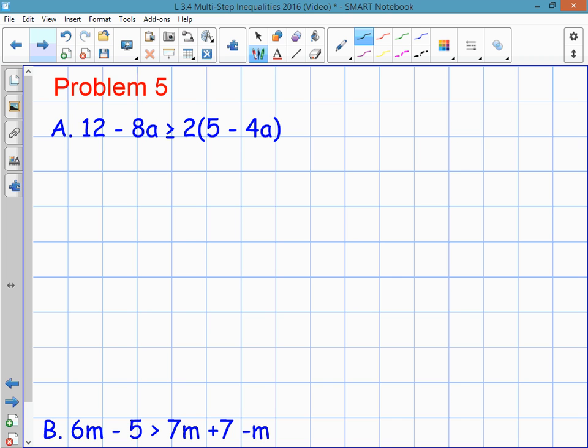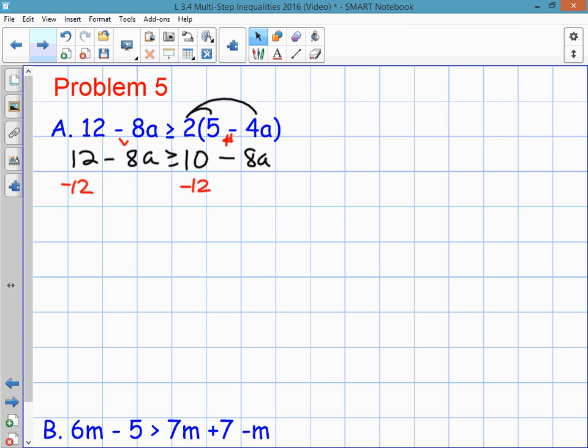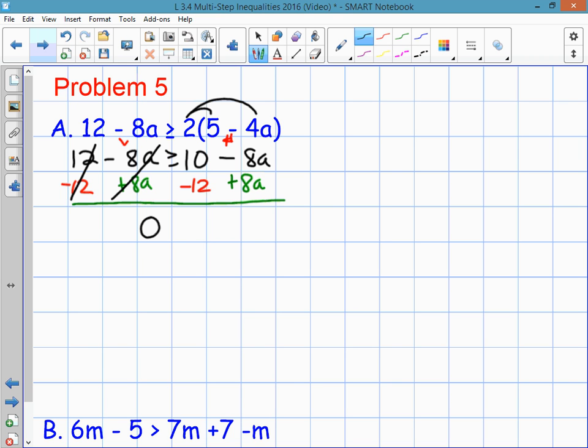In this first example, problem 5a, first step is to distribute the 2. So I get 2 times 5 is 10. Minus 2 times 4a is 8a. Because there are variables on both sides, I'm going to choose a variable side and a number side. And I'm going to subtract 12 from this side and subtract 12 from this side to get rid of the numbers. And on the number side, I'm going to add 8a and add 8a. And what you'll notice is on the left-hand side, the 12s cancel each other out. And the 8a's cancel each other out, leaving you with 0. And on the right-hand side, the 8a's go away. 10 minus 12 is negative 2.